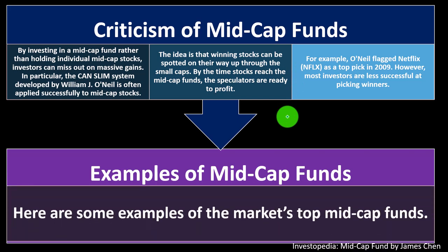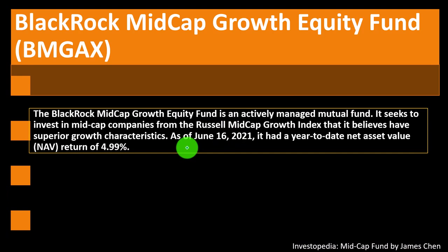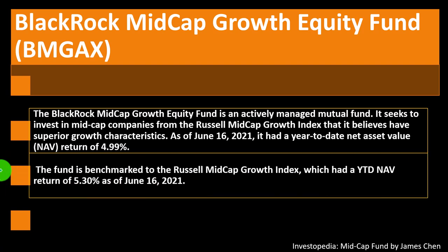Examples of mid-cap funds: the BlackRock Mid-Cap Growth Equity fund, ticker BMGAX, is an actively managed mutual fund — not an index, so you have a manager involved. It seeks to invest in mid-cap companies from the Russell Mid-Cap Growth Index that it believes have superior growth characteristics, essentially trying to beat the index. As of June 16, 2021, it had a year-to-date NAV return of 4.99%, while the Russell Mid-Cap Growth Index had a year-to-date NAV return of 5.3%. The fund had a gross expense ratio of 1.14% and a net expense ratio of 1.05% for A shares.